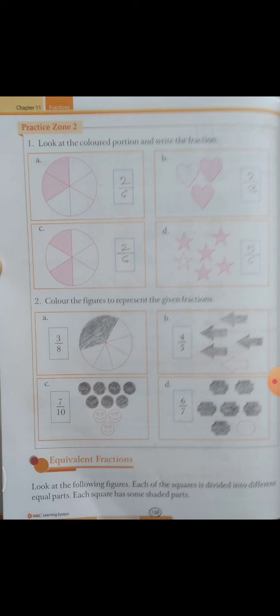D part ke andar stars de rakhe hain — 6 stars hain total, unme se 5 shade hain, toh 5 by 6.